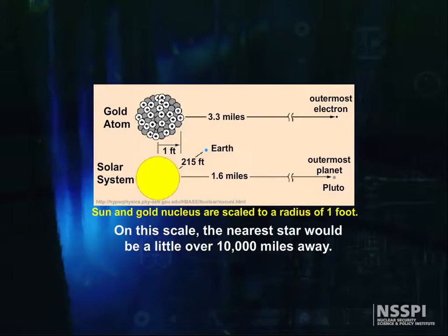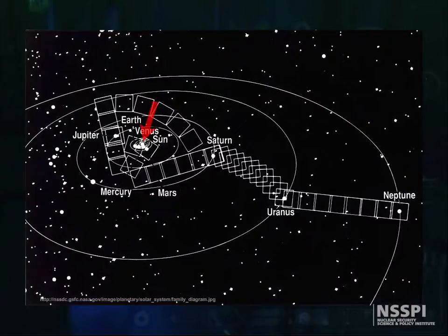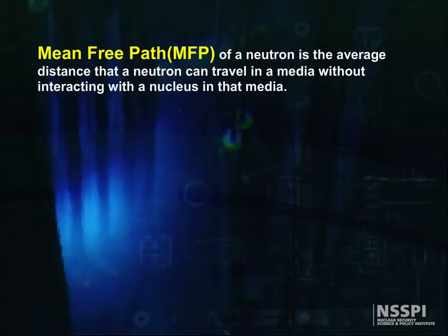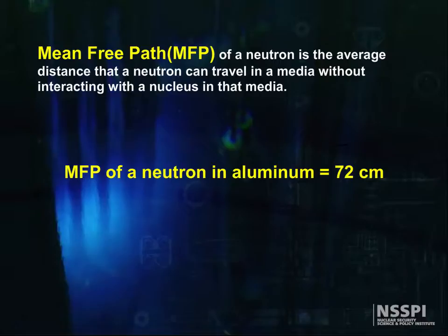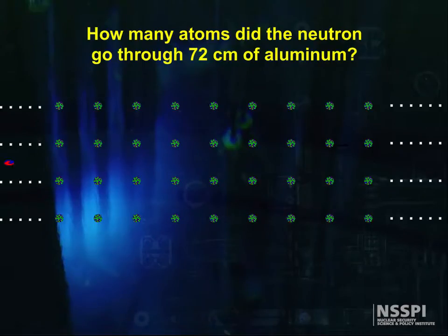Neutrons show that this emptiness in atoms is true. Think about how often you would have to shoot a laser beam at random into the solar system to finally hit the sun. The mean path for a neutron is often over 10 centimeters, and for aluminum it's 72 centimeters. How many atoms did the neutron go through?